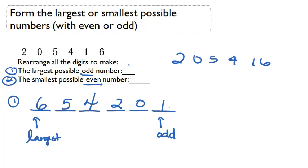So our largest possible odd number: six, five, four, two, zero, one. Let's do number two.